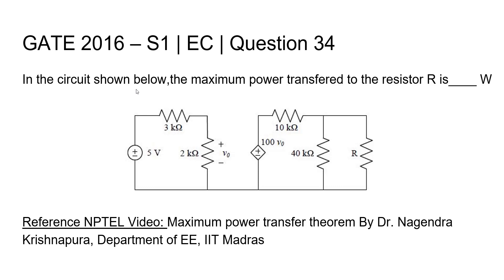Question 34, Electronics and Communication Engineering, Gate 2016, Set 1. In the circuit shown below, the maximum power transfer to the resistor R is dash Watt.